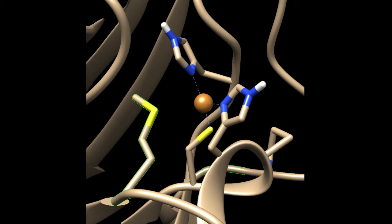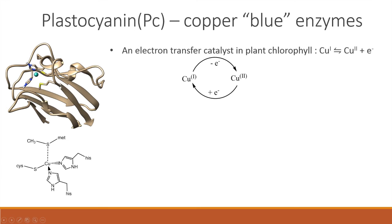The geometry is so distorted that it closely resembles trigonal planar, with a methionine-sulfur apex, due to the fact that the copper-sulfur bond is so weak and long at around 2.9 angstroms. It is said to have a 3+1 coordination sphere for this reason. The protein functions as an electron transfer agent linking cytochrome F in photosystem II to P700+ in photosystem I within plant chlorophyll, making it very important for photosynthesis.